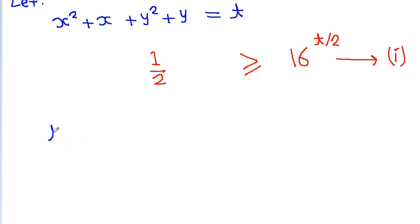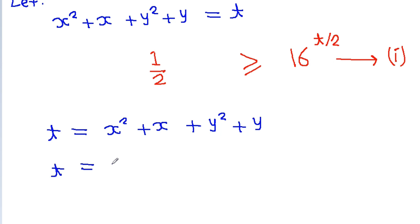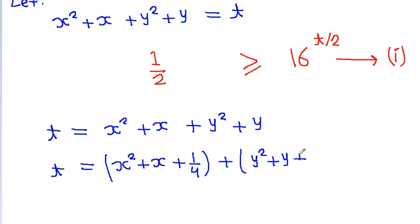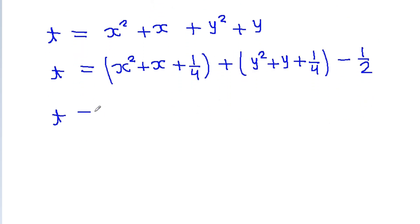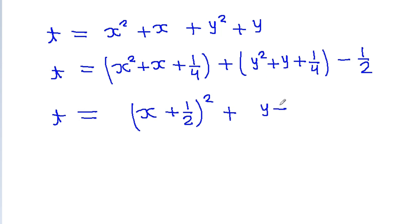Now, we have t = x² + x + y² + y. We can rewrite this by completing the square: t = (x² + x + 1/4) + (y² + y + 1/4) − 1/2, which gives t = (x + 1/2)² + (y + 1/2)² − 1/2.